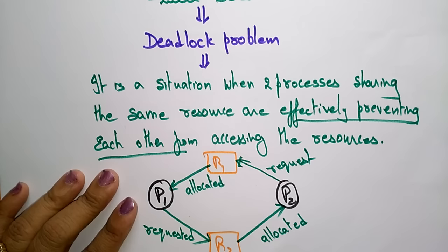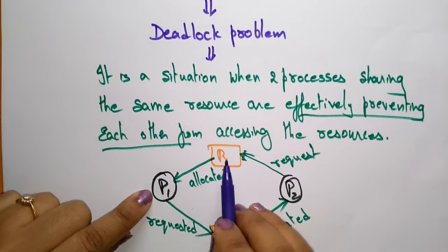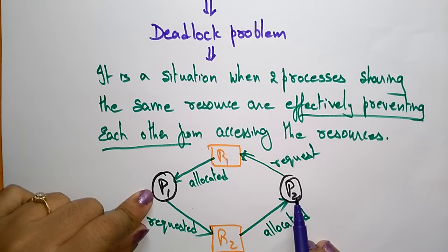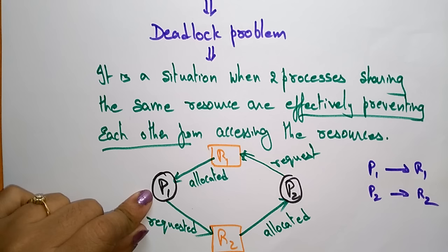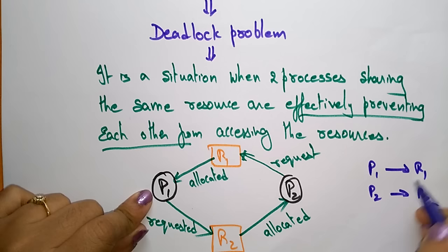P1 is already holding R1 and requesting R2, but R2 is already held by P2, which is requesting R1 — held by P1. P1 is holding R1 and P2 is holding R2. Until P2 releases R2, P1 cannot access it. Until P1 releases R1, P2 cannot access it. This state is called a deadlock.